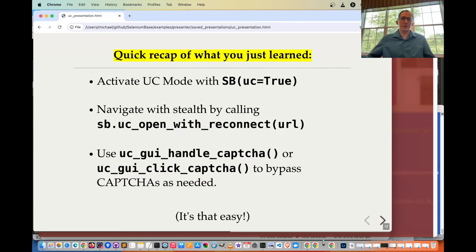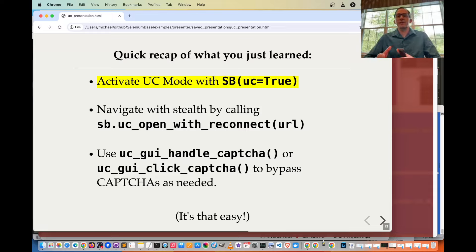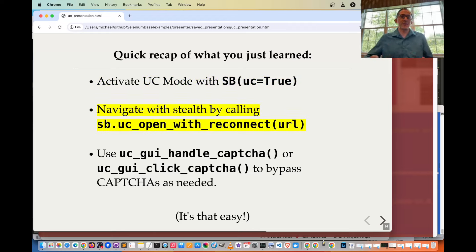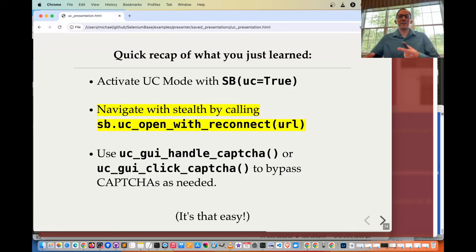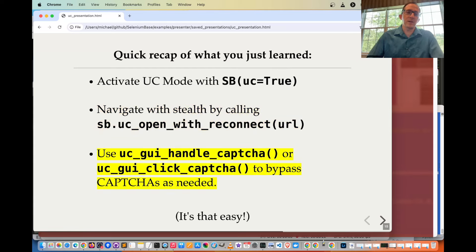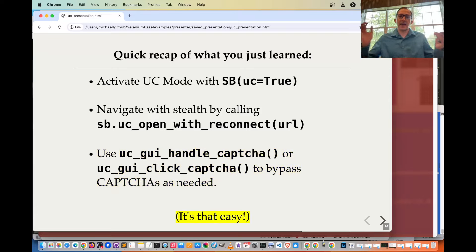Here's a quick recap of what you just learned. You can activate UC mode with UC equals true — here it's SB UC equals true because we're using that syntax format. To navigate with stealth, call UC open with reconnect and the URL. You can also specify an optional reconnect time if the default isn't long enough — just make sure your reconnect time is longer than it takes for your page to load. You can use UC GUI handle CAPTCHA or UC GUI click CAPTCHA to bypass CAPTCHAs as needed.